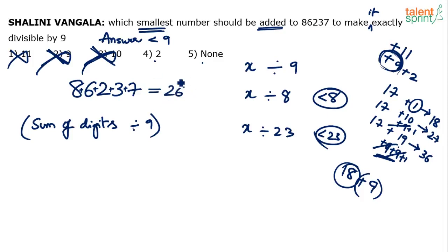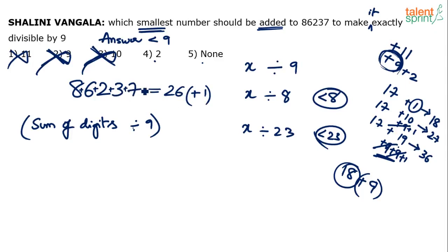By adding what smallest number to 26 will it become divisible by 9? I can add 1: 26+1=27, and 27 is divisible by 9. I can also add 10 to get 36, but we want the smallest number, so adding 1 is the answer. Adding 1 to the sum of the digits means adding 1 to 86237 itself: 86238 is divisible by 9. So the answer is 1.